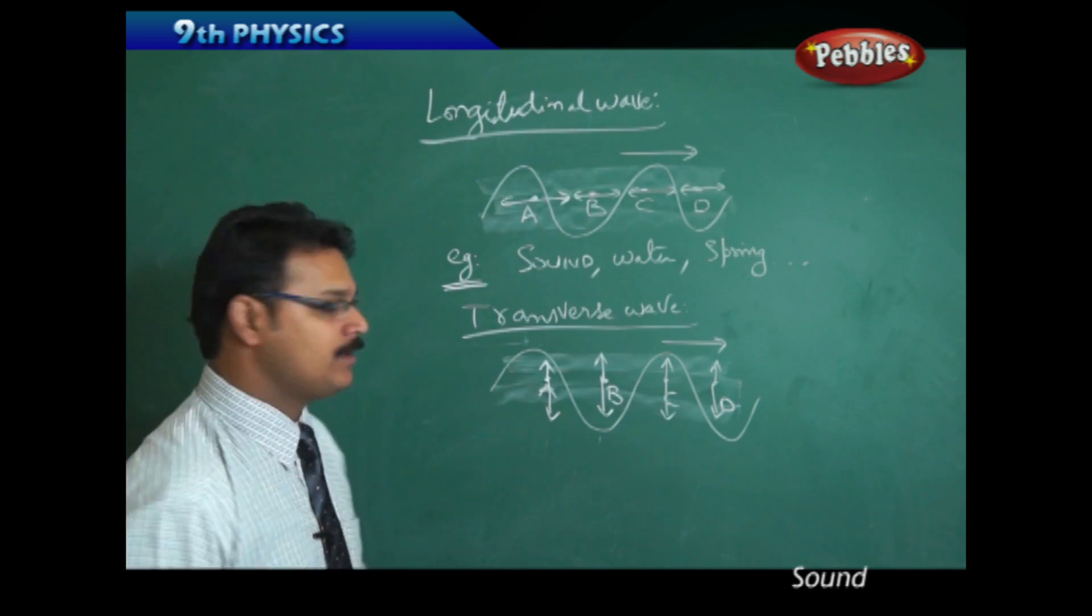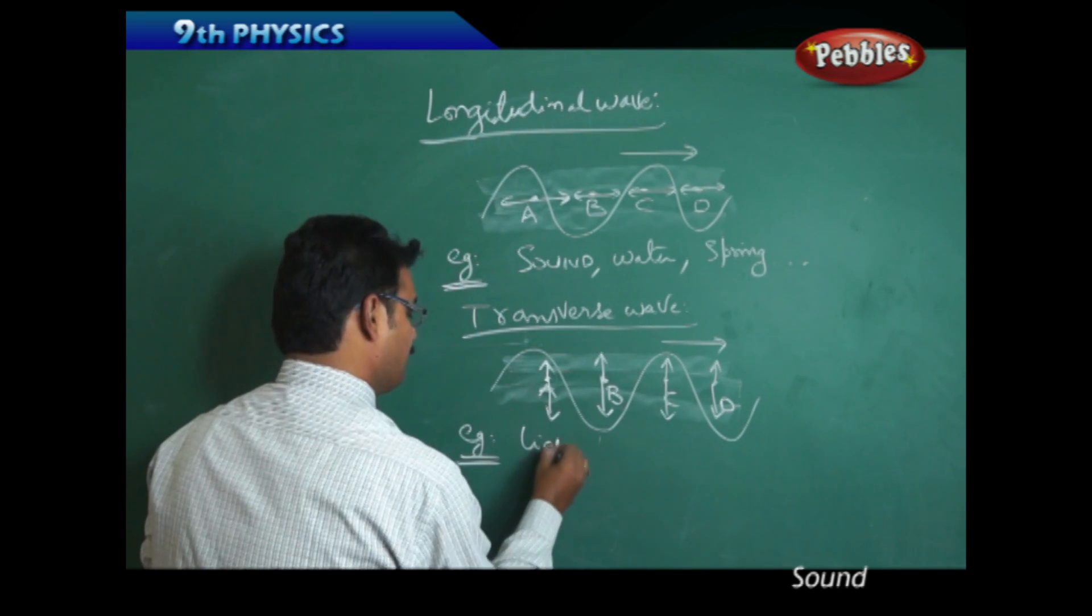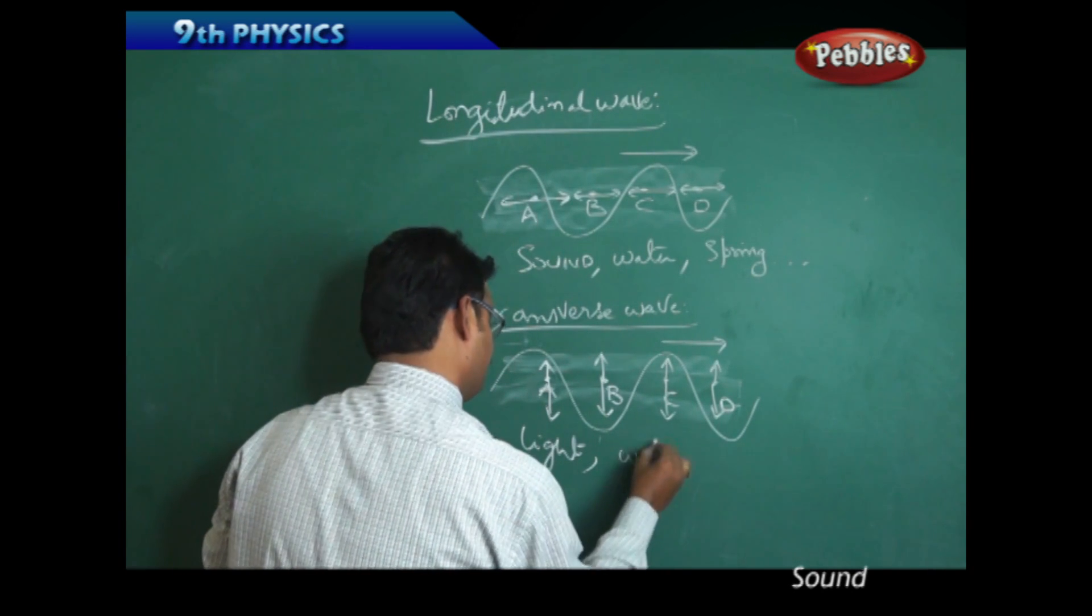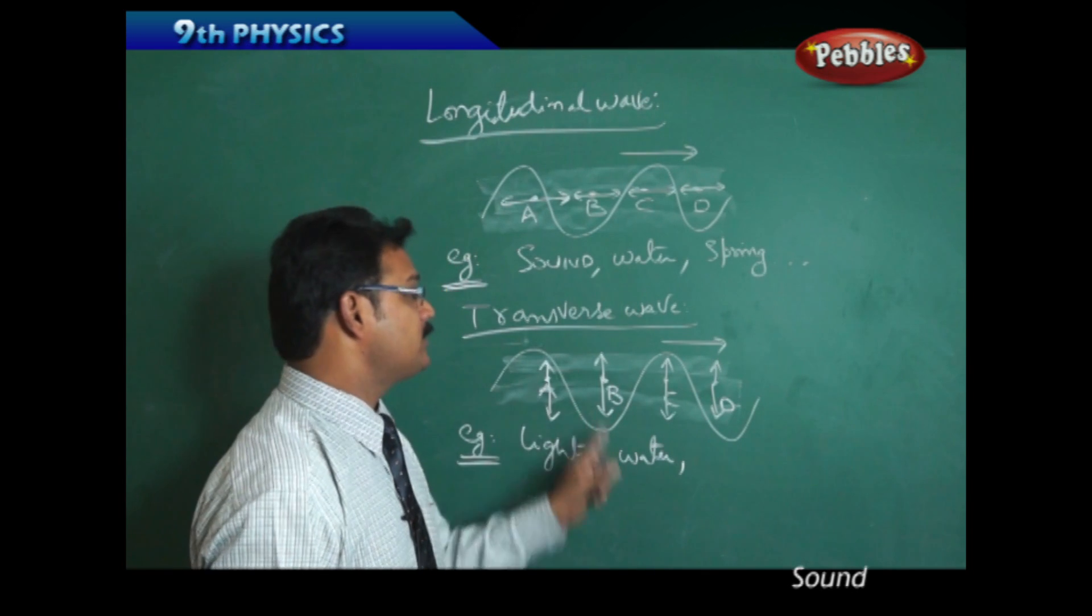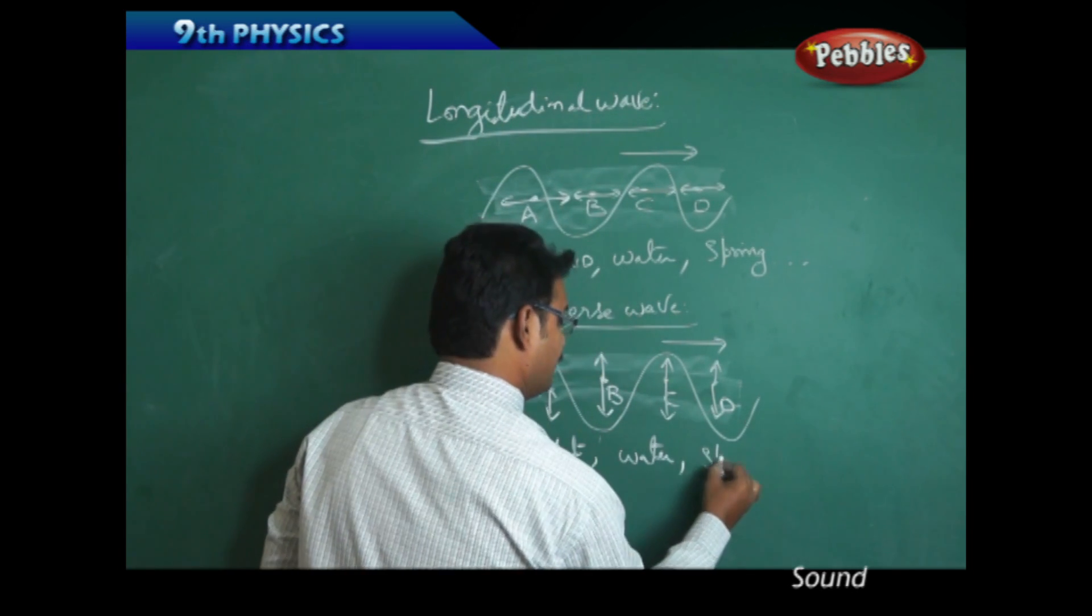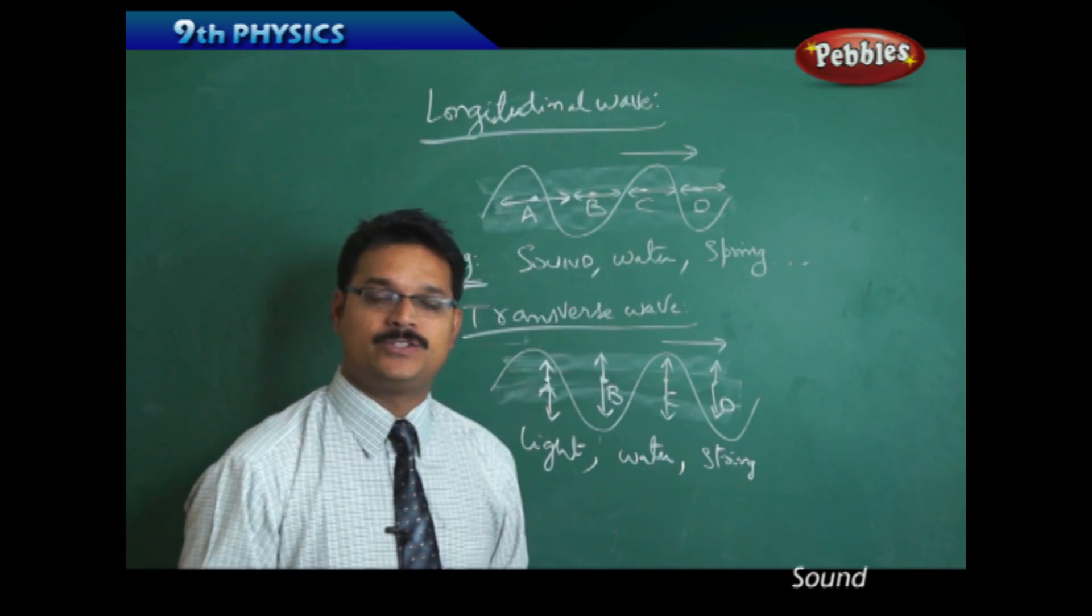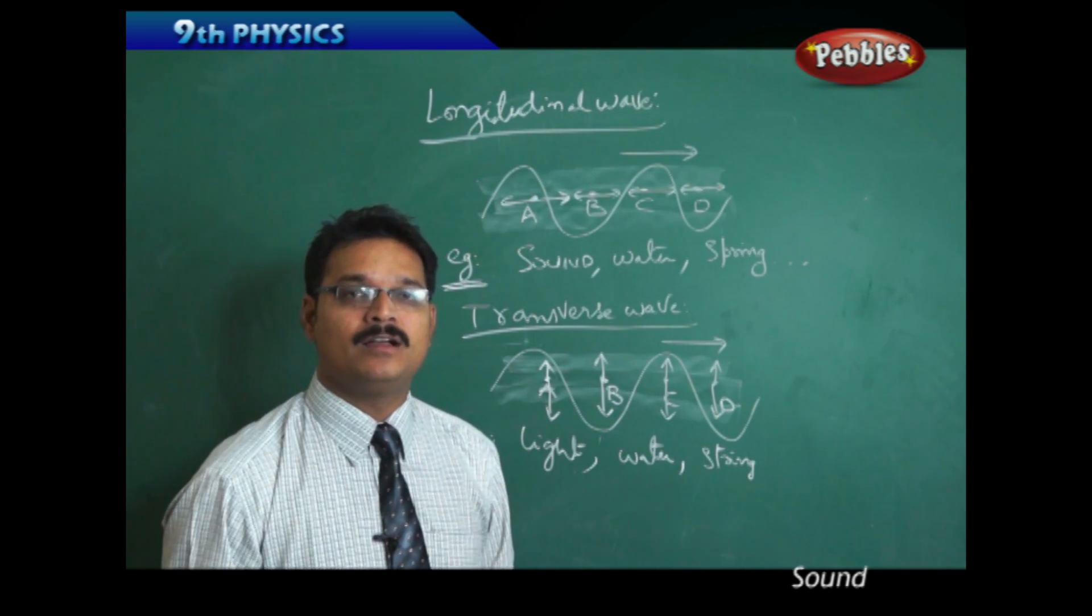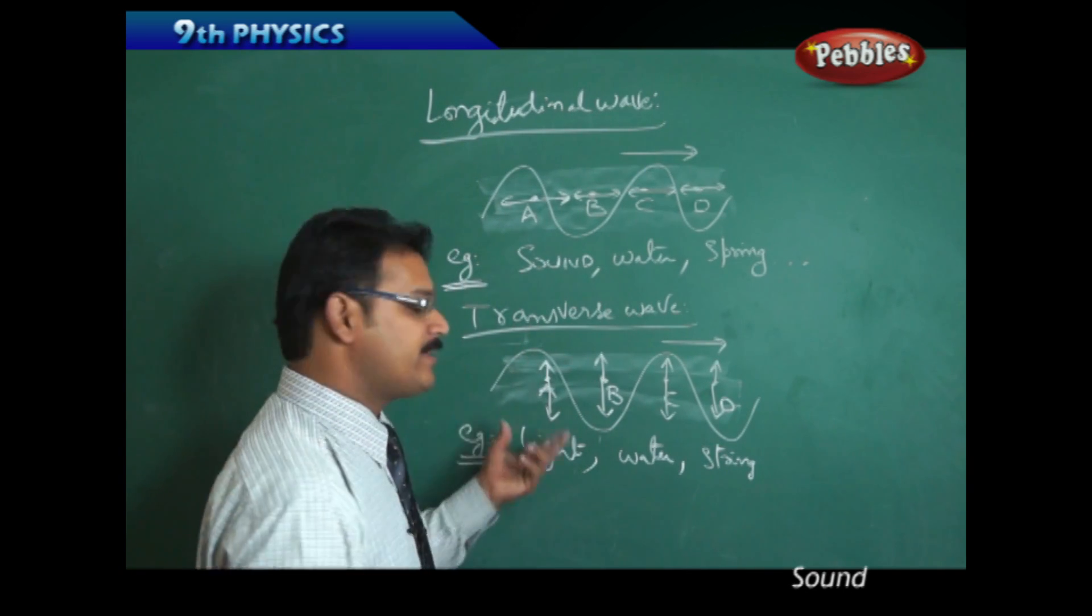Examples of transverse waves are light—light is a transverse wave. In water, you can produce both transverse and longitudinal waves. And strings, like strings of musical instruments—guitar, violin, veena—when you pluck these strings, you're producing transverse waves.